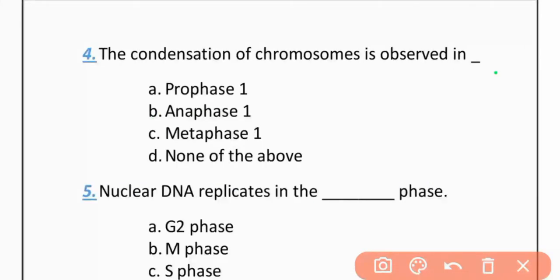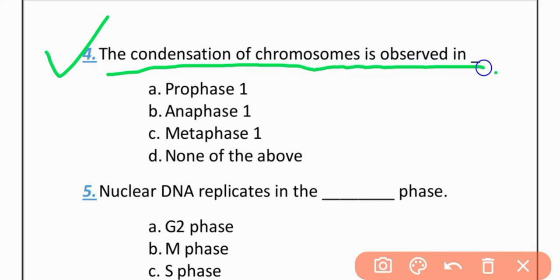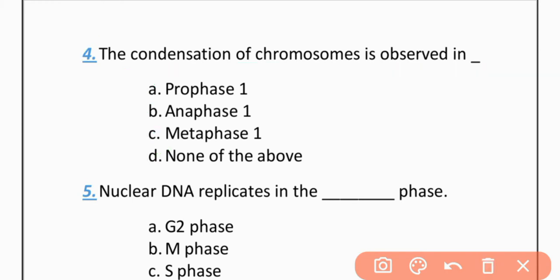MCQ 4: The condensation of chromosomes is observed in — Option A: Prophase. Option B: Anaphase 1. Option C: Metaphase 1. Option D: None of the above. The correct option is A — Prophase 1.